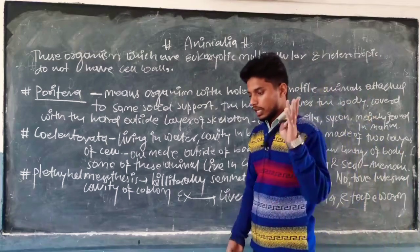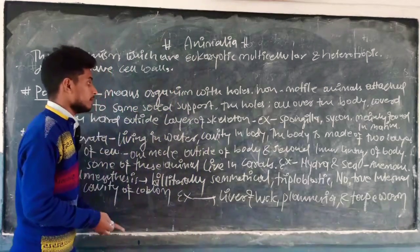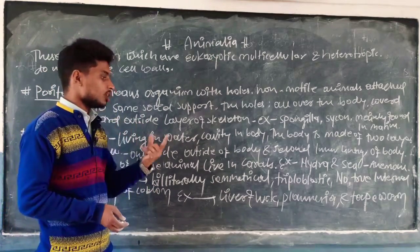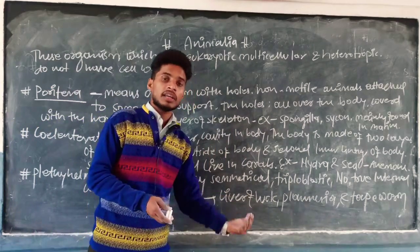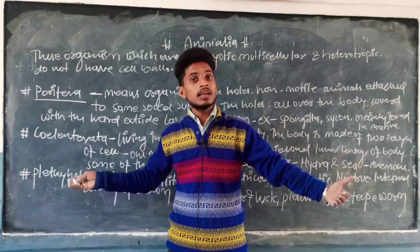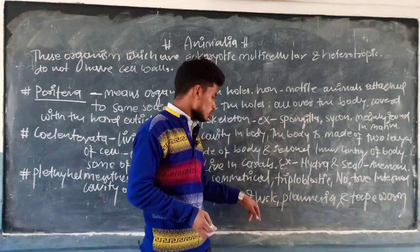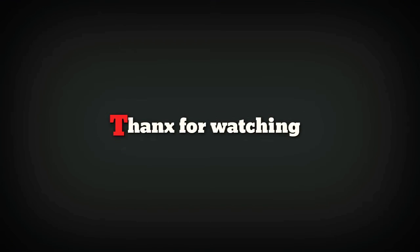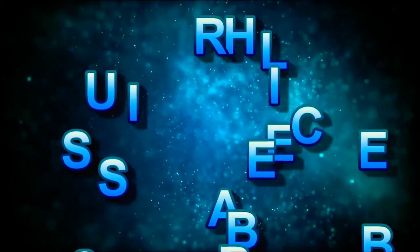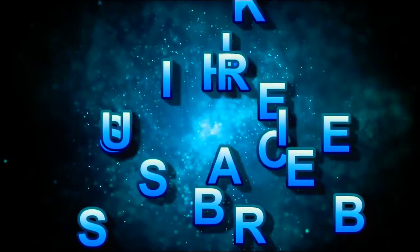Example के तौर पर Platyhelminthes में हम देखते हैं: Liver Fluke, Planaria, और Tapeworm। ये तीनों animals Platyhelminthes subgroup of invertebrate in animal kingdom के अंतर्गत आते हैं। जरूरी नहीं कि तीन organism ही हों — इससे और बहुत सारे organisms हैं जो Platyhelminthes के अंदर आते हैं। Platyhelminthes के इन तीनों में से किसी एक का diagram आप बना सकते हैं।